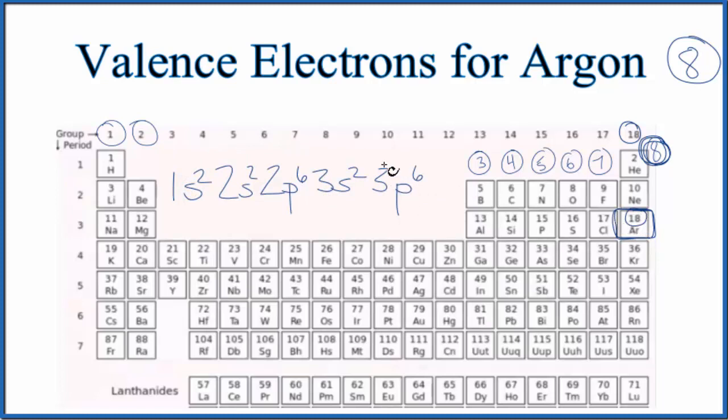But we're interested in the valence electrons. Those are the electrons in the highest energy level. Here, that's the third energy level. You can think of this as the outer shell. So if we look at the outer shell or the highest energy level, we have 2 plus 6. That's 8.